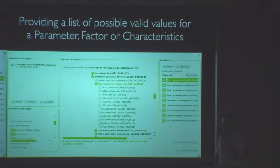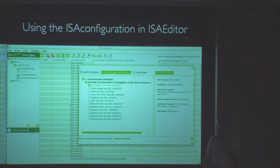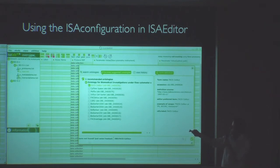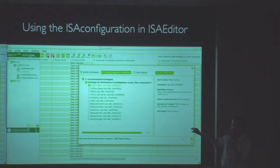This is a very nice way to configure a field and allow people — this is a view from the ISA creator — to organize a spreadsheet layout, and in this particular field, the flow cytometry instrument value is coming straight from OBI, so people have a restricted set of values they can choose from.